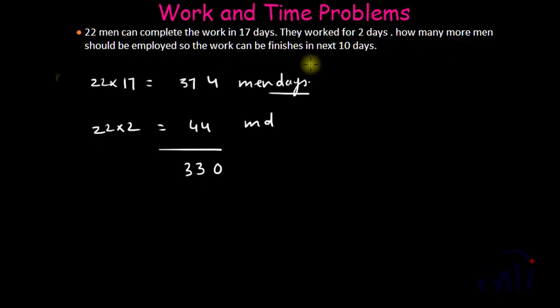And then you have to find how many more people should be employed to finish the job in next 10 days. So amount of work remaining is equivalent to 330 men days and you want to finish the job in 10 days. So you will actually need 33 people to finish the remaining job in 10 days. That means you will need 11 more men. Pretty fast enough.